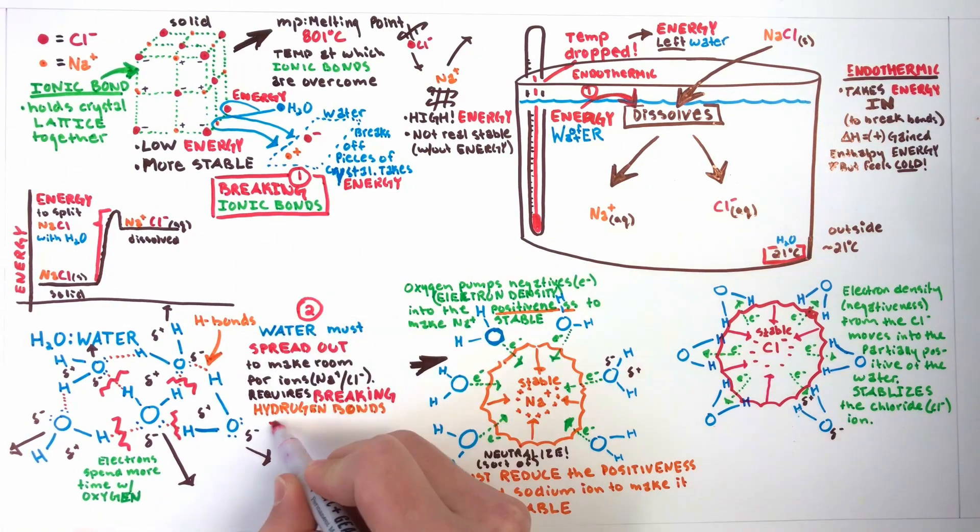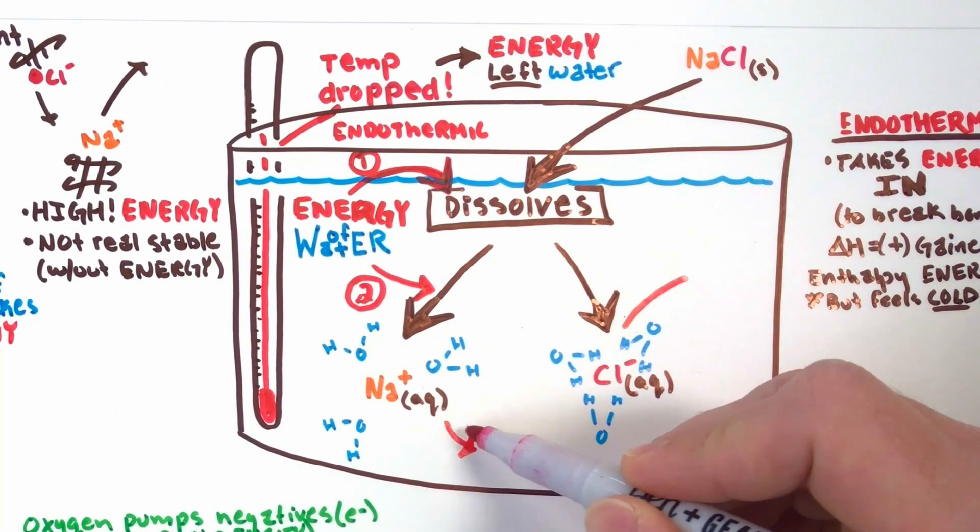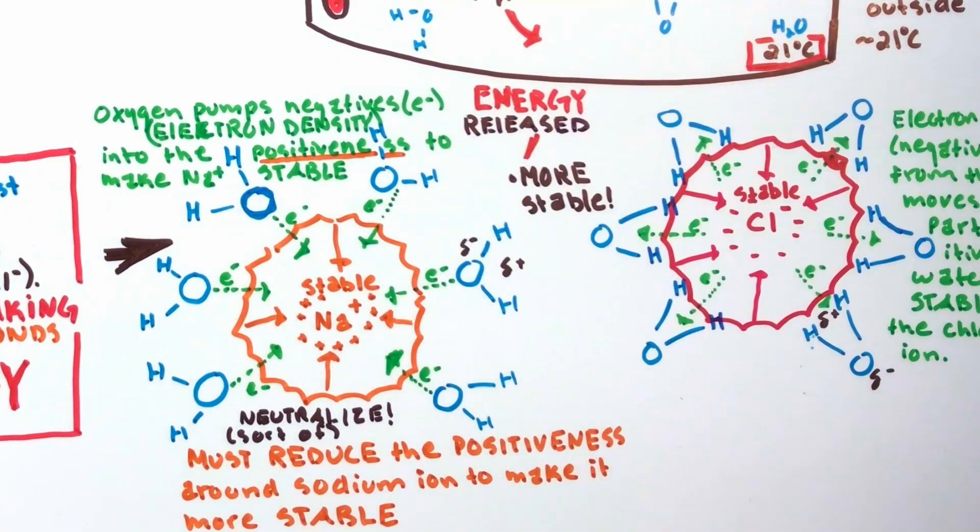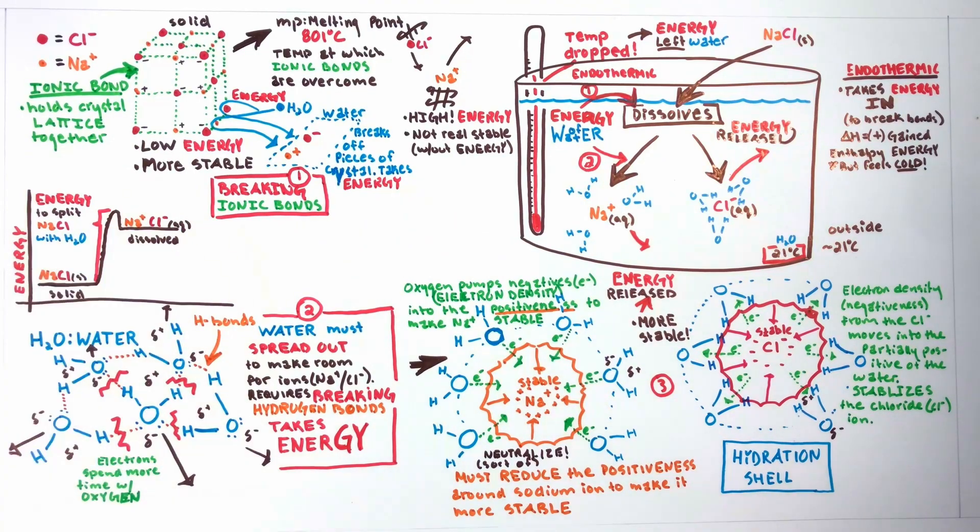So breaking the salt apart and spreading out the water took energy and cooled the water. While surrounding the ions with water, called hydration shells, made them more stable and released energy warming the water. We can see this is the drop on the graph.